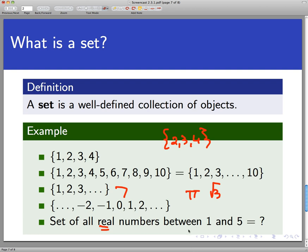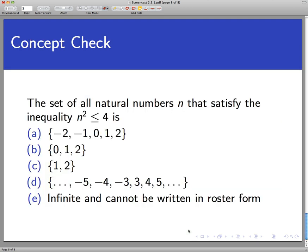So now that we've seen some examples and got our minds around the notation, let's do a concept check. What is the set of all natural numbers n that satisfy the inequality n squared less than or equal to four? Here are your five options. Notice that the fourth one is an infinite set and E we're saying the set of numbers is infinite, but it's not easy to write in roster form. Take a moment to read over these five options. Pause the video and make your selection and come back when you are ready.